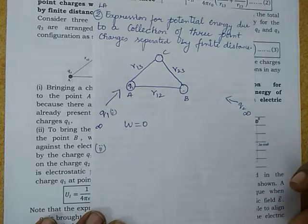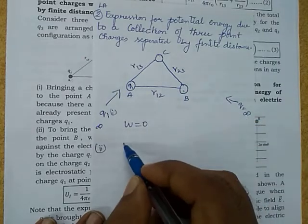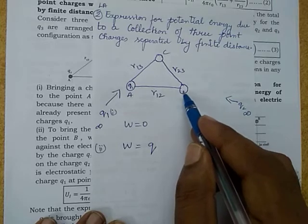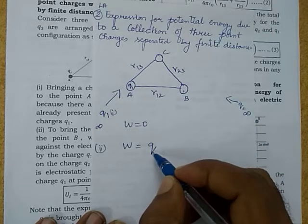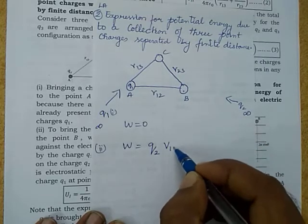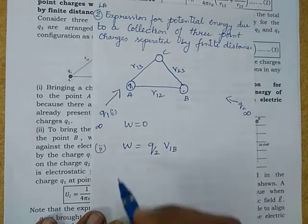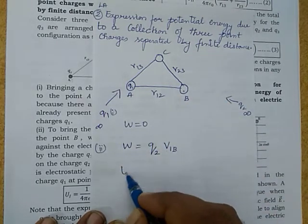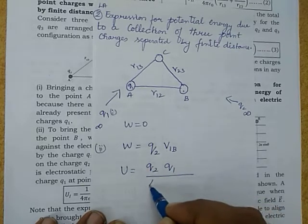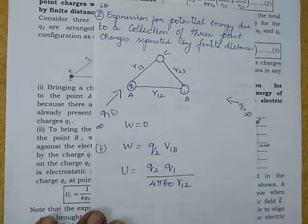For that, we have to apply some work, because at point B there will be a potential. So the work done in bringing the charge q2 to point B from infinity is q2 times V1B. V1B is the potential at B due to the charge q1. So the potential energy will be U equal to q2 times q1 over 4π epsilon-0, and the distance is r12.